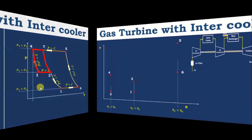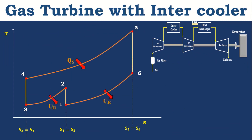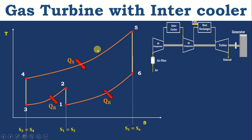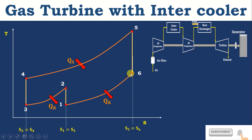Now let's draw the TS diagram. We know that for isentropic compression, entropy is constant and temperature increases. Then for constant pressure heat rejection, temperature and entropy drop. For 3 to 4, again isentropic compression where entropy is constant and temperature increases. For 4 to 5, constant pressure heat addition — pressure is constant, temperature and entropy increase due to heat addition. For 5 to 6, isentropic expansion in the turbine where entropy is constant and temperature drops. And 6 to 1 is constant pressure heat rejection where entropy and temperature drop but pressure is maintained constant.